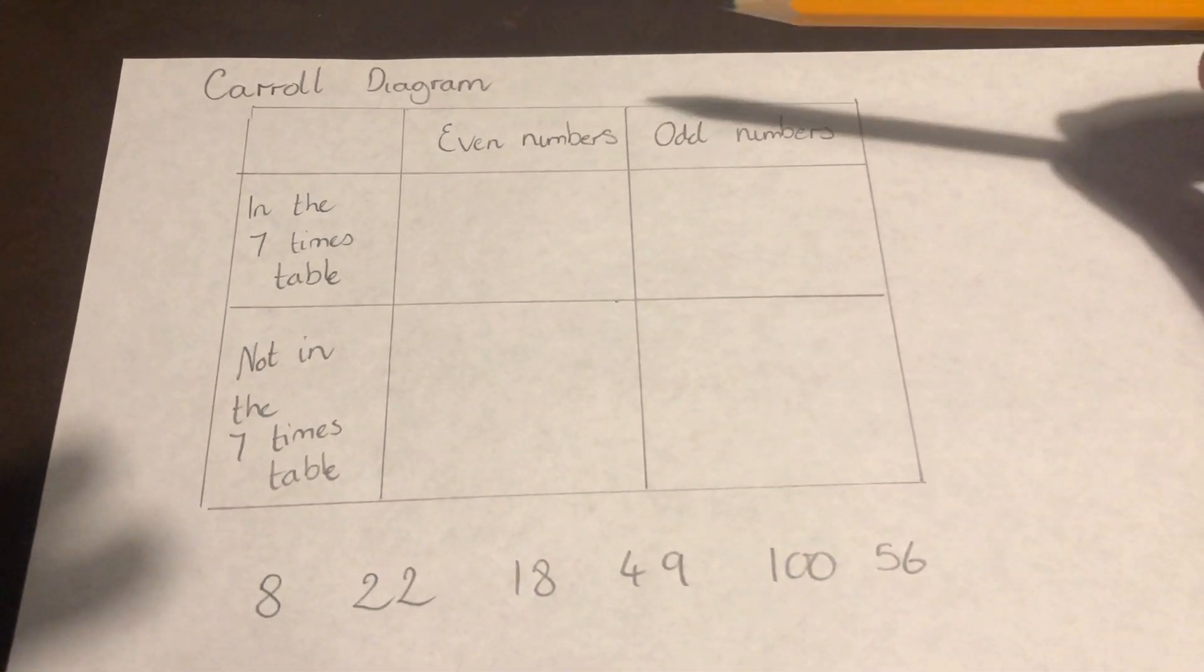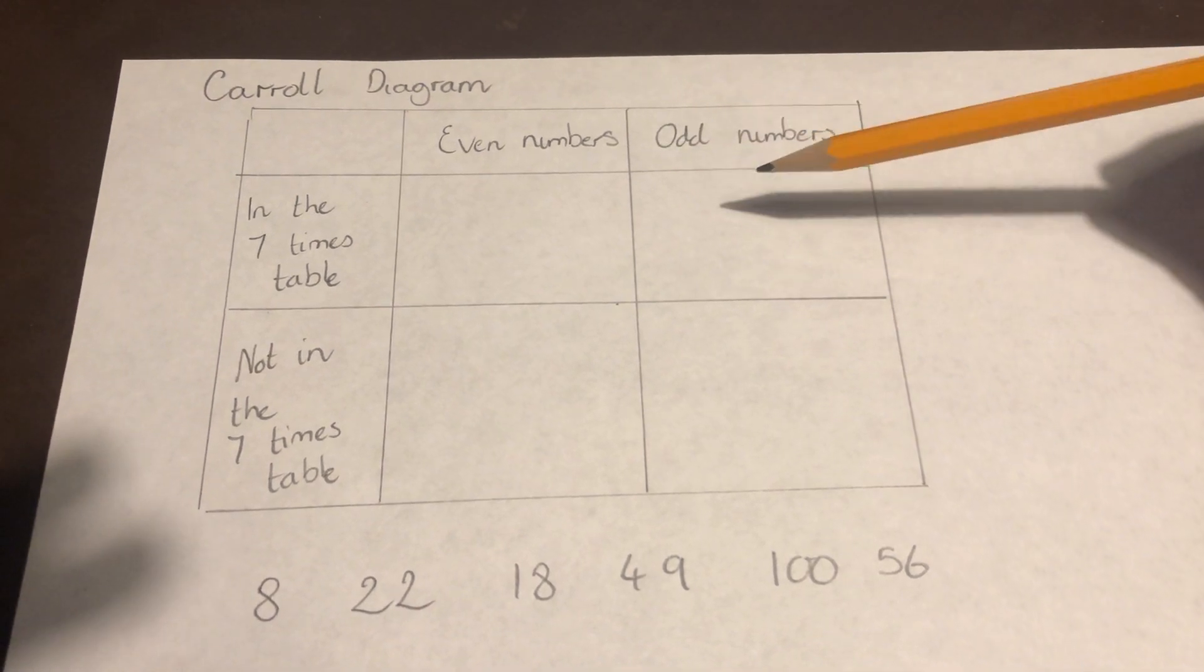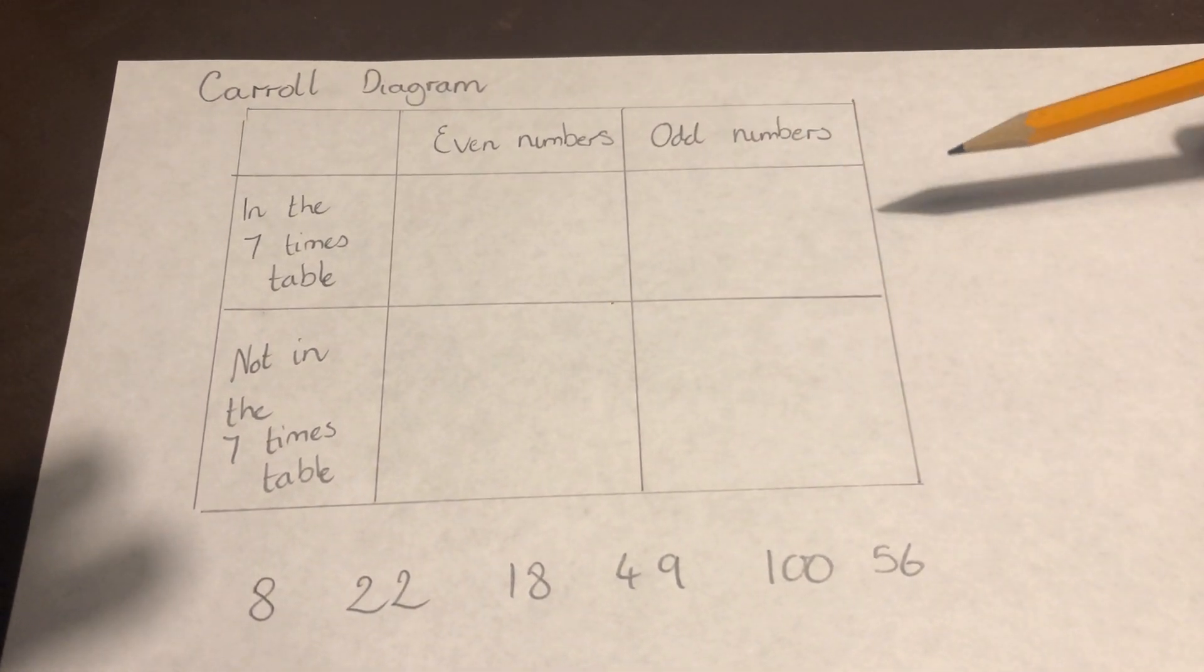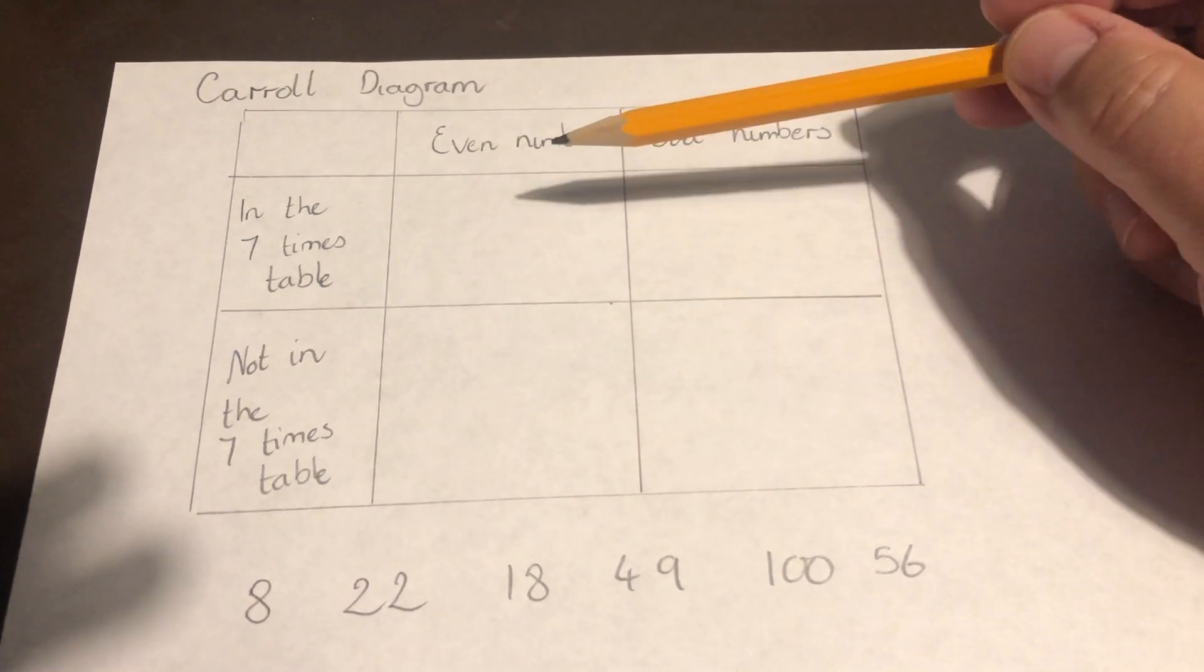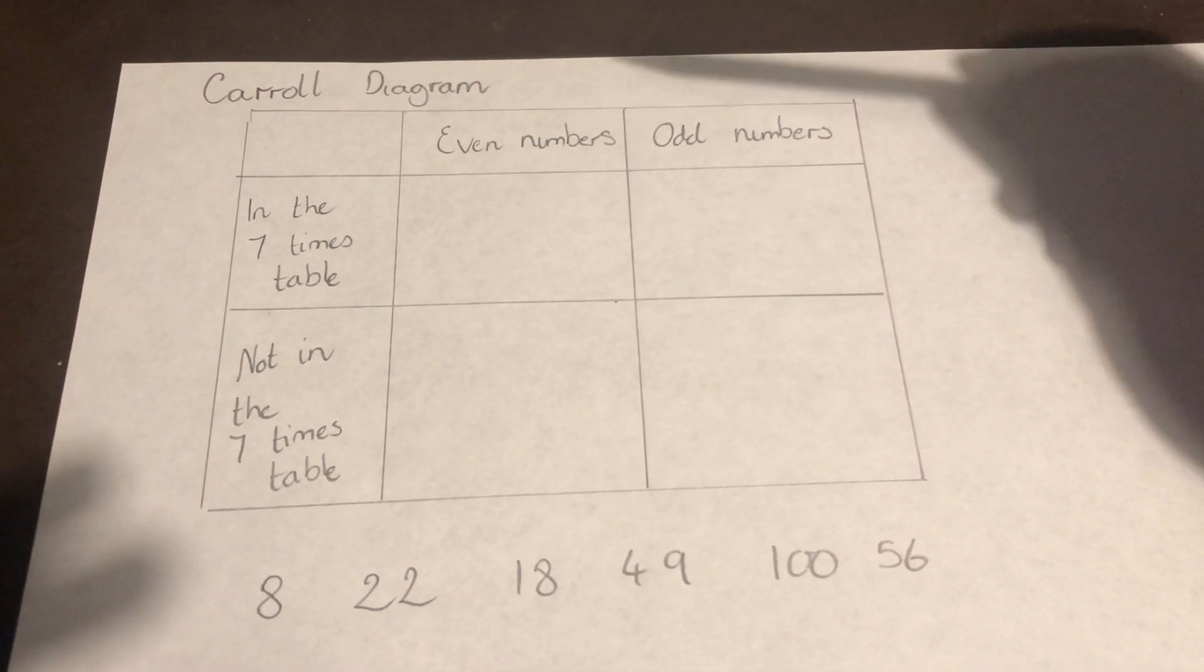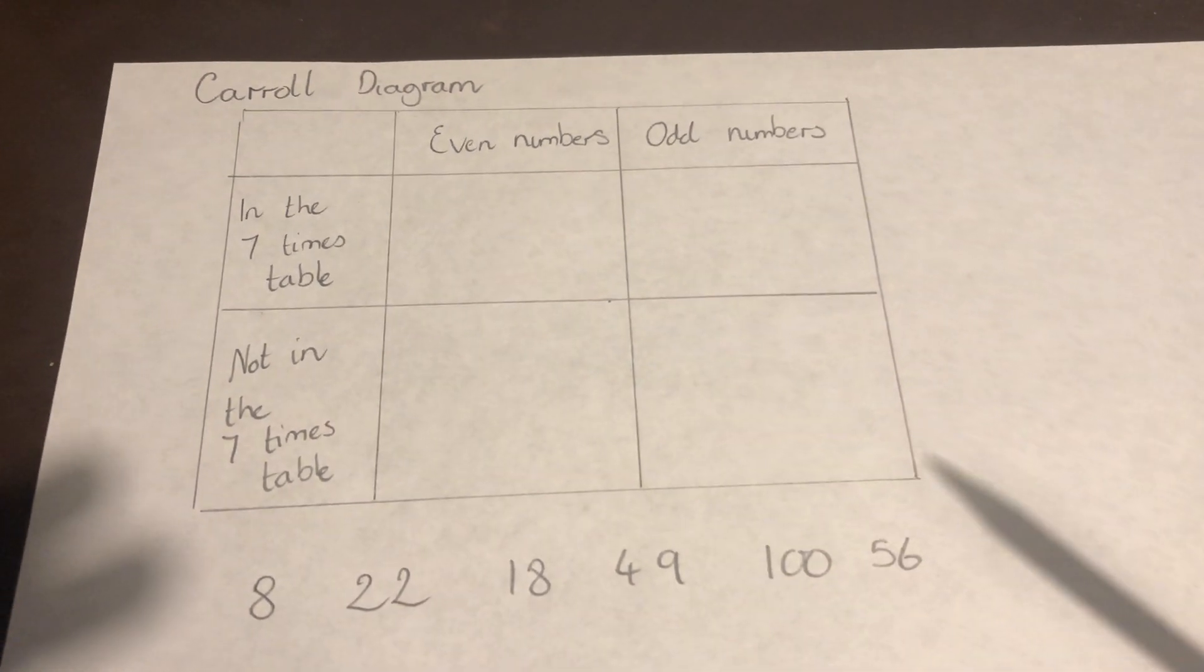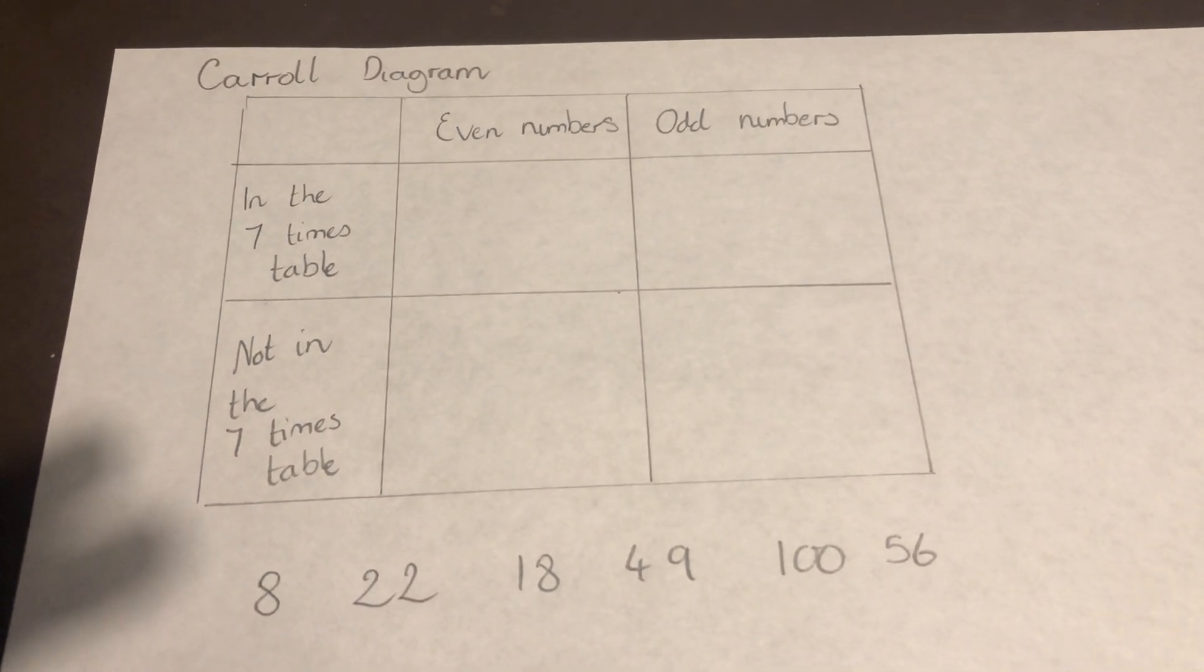This film is showing us two different types of diagrams, ways to represent data. We're going to look at Carroll diagrams, which is this one, and also Venn diagrams. I'm going to show you how to fill some in and how to read them, and then that will help with the questions.